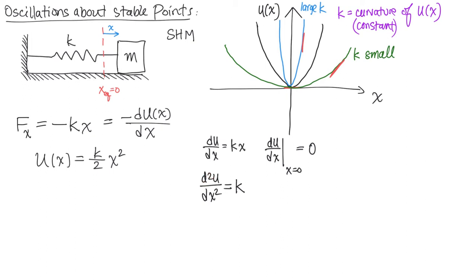Rather than writing out d squared U dx squared every time, we're going to introduce the prime notation as a spatial derivative. Two spatial derivatives — d squared U dx squared — we'll write as U double prime. And if we want to evaluate that second derivative at some specific position x-naught, we'll write it as U double prime evaluated at x-naught, equivalent to d squared U dx squared evaluated at x equals x-naught. From now on we'll use this shorter-hand notation: U double prime.